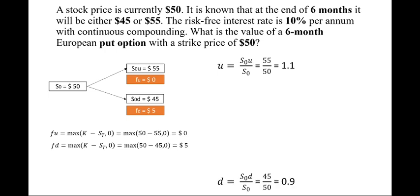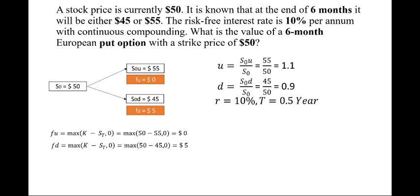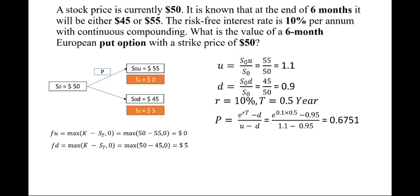Calculating u = S0u / S0 = 55/50 = 1.1, and d = S0d / S0 = 45/50 = 0.9. With r = 10% and T = 0.5 years, using the formula p = (e^(rT) − d) / (u − d), we get p = 0.6751 (probability of upward movement) and 1 − p = 0.3249 (probability of downward movement).